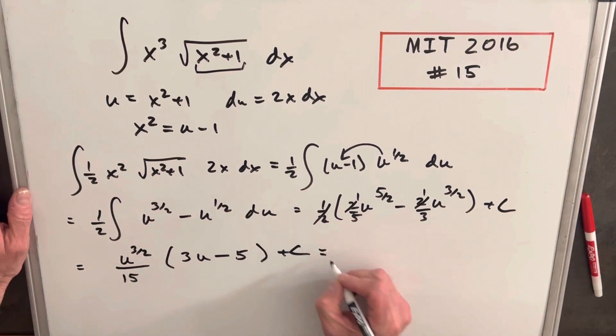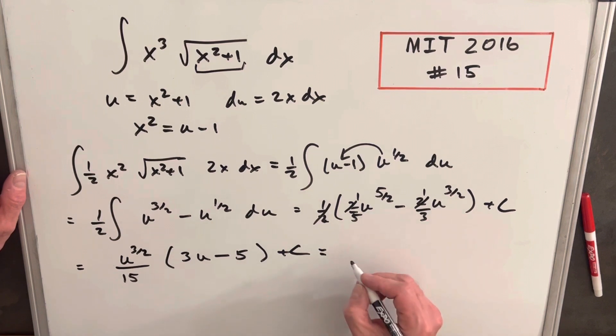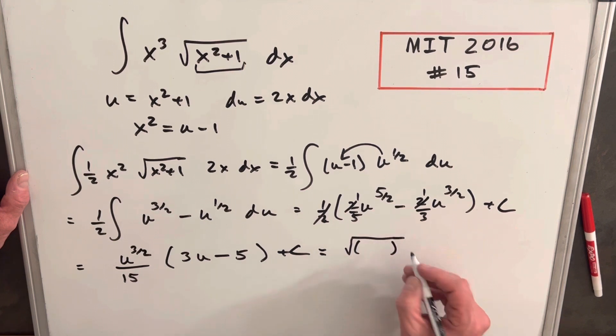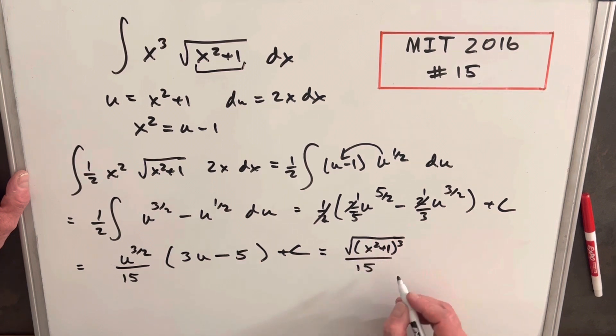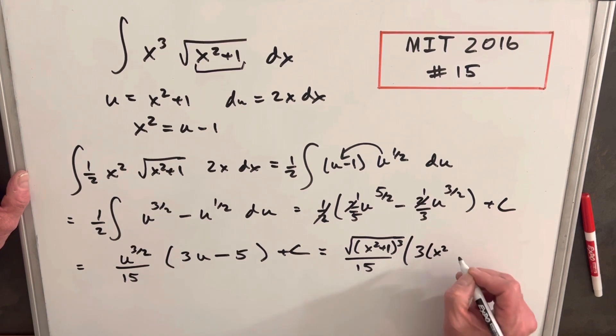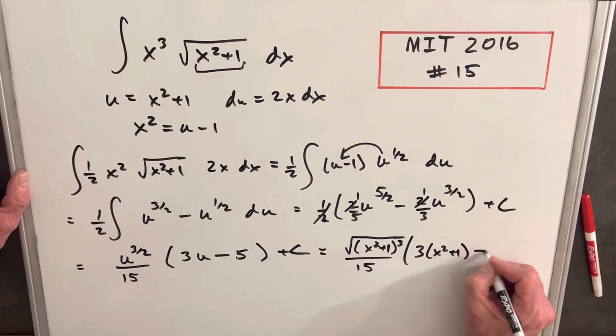And now I can do my back substitution. It's going to be a little easier on me. So we'll do u 3 halves. So we're going to write this as like this. The half will have the square root in the y of this cubed. x squared plus 1 over 15 times 3 times x squared plus 1 minus 5.